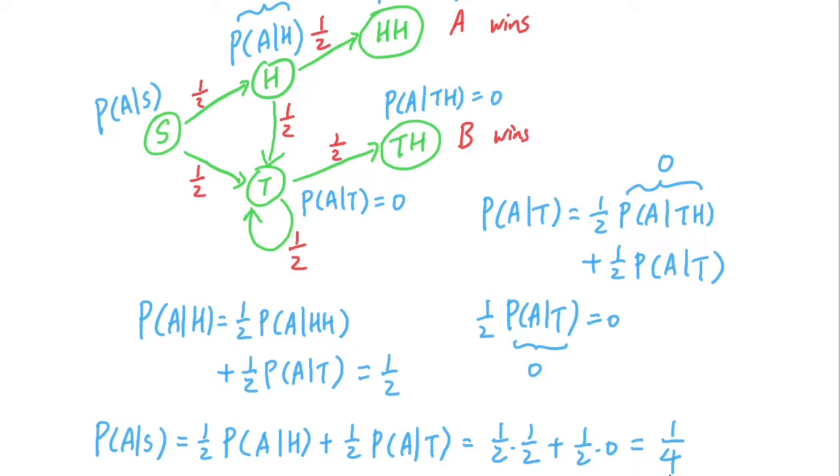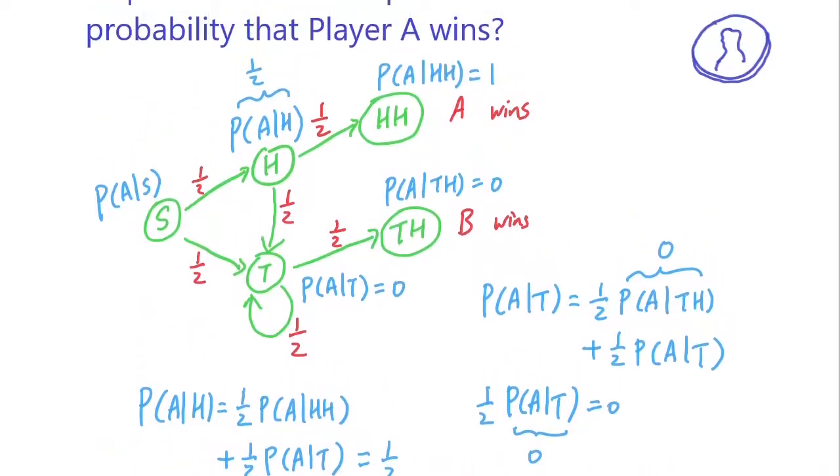From the starting state, player A only has a probability of one fourth to win. Let's look at the diagram to see why. Starting from the initial state, there's a 50% chance you're going to get a head and a 50% chance you're going to get a tail.